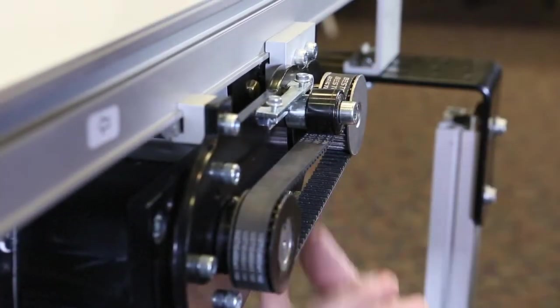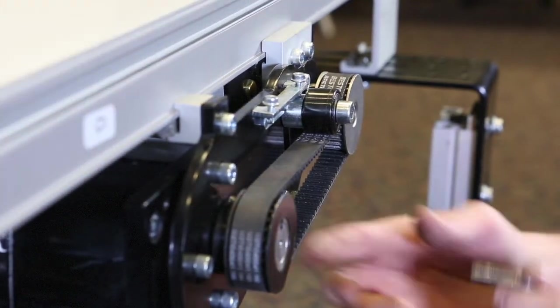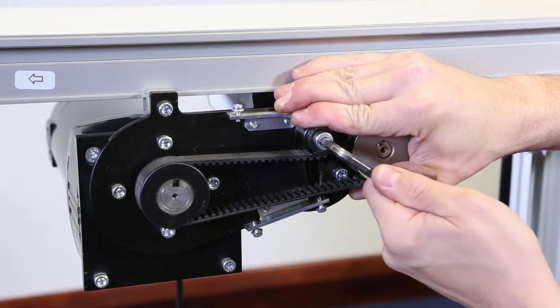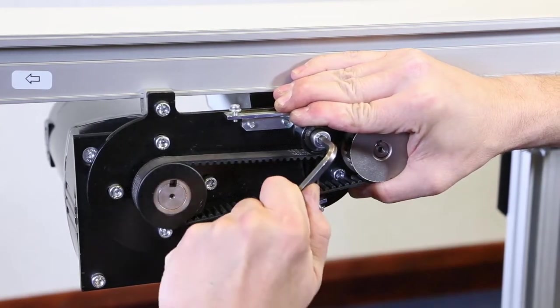Install the timing belt tensioner onto the plate. The position will depend on the direction the belt travels. Refer to the manual for the correct position.